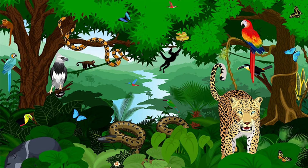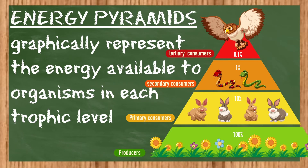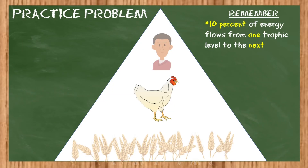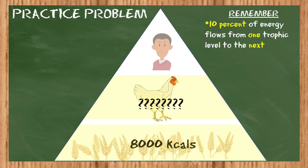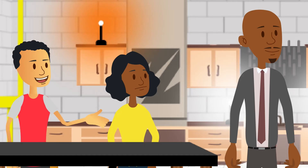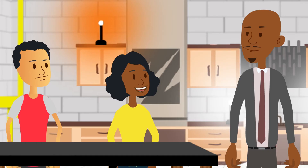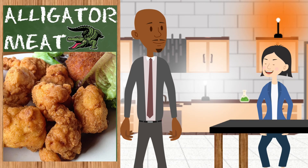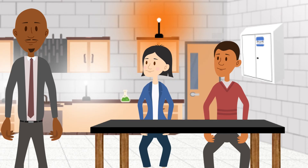A great way to view this is in an energy pyramid, which graphically shows the amount of energy available to organisms in each trophic level. Let's look at a practice problem: if the grain starts with 8,000 kilocalories of energy and 10% moves on to the next level, how much energy would the chicken gain? That's easy — 800. And how much would Gerardo get? 80 kilocalories. And if something ate him, like a gator — 8. I went to Louisiana this summer and had some tasty alligator — don't knock it until you try it.